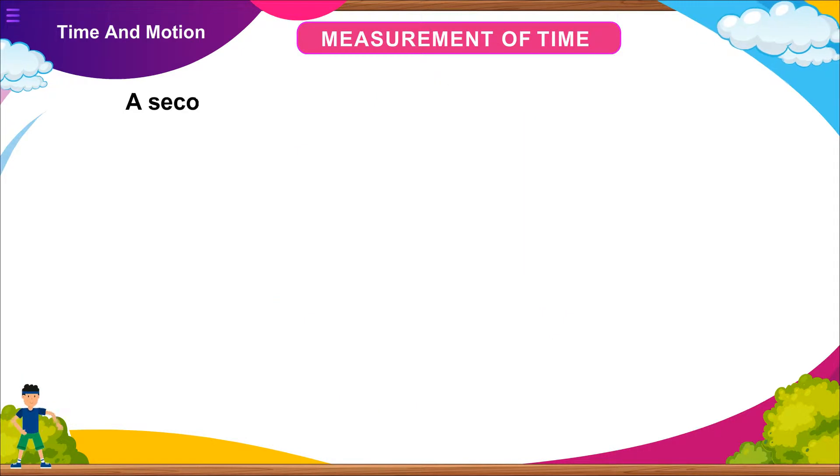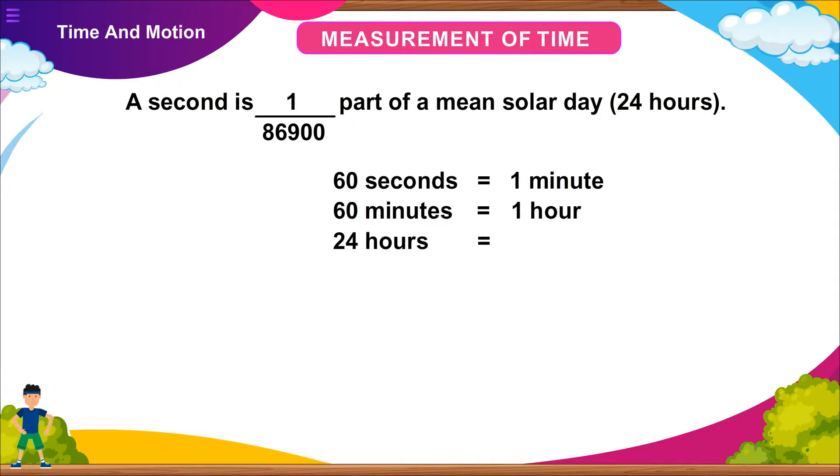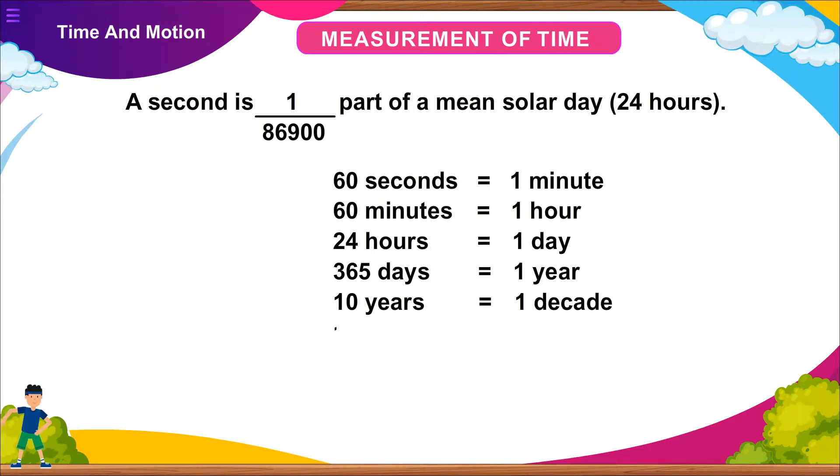A second is 1 by 86900 part of a mean solar day. 60 seconds equals 1 minute. 60 minutes equals 1 hour. 24 hours equals 1 day. 365 days equals 1 year. 10 years equals 1 decade. 10 decades equals 1 century. 10 centuries equals 1 millennium.